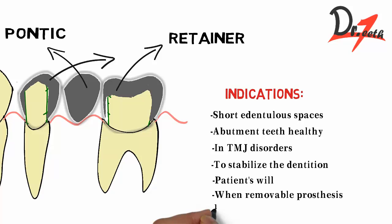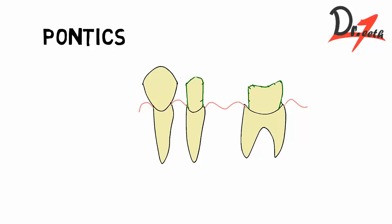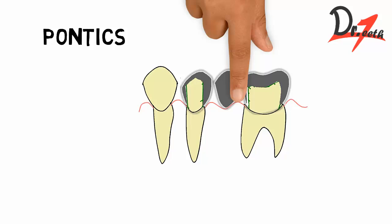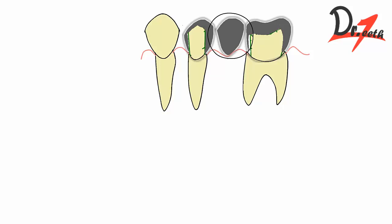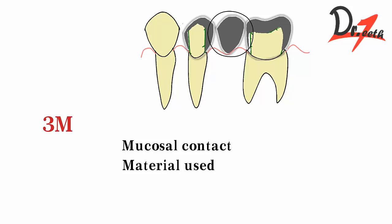FPD is also indicated when a removable denture is not indicated for some reason. Now, the pontic is the artificial replacement tooth. It has been classified into three types — based on mucosal contact, material used, and method of fabrication.